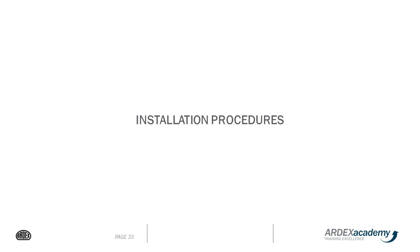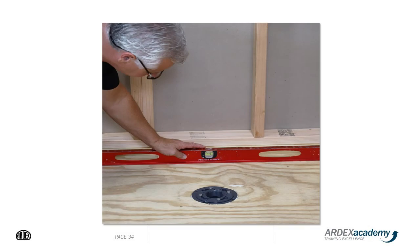Let's go through some of the installation procedures of the ARDEX TileLite system. First of all, you have to make sure the substrate is level. The shower pans are already pre-sloped, so it's very important that the substrate the pan is installed on is level. If your floor is not level and it's wood, you can use the ARDEX Liquid Backerboard or ARDEX SKM to bring that into level.